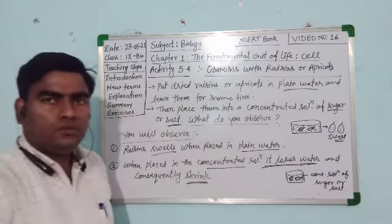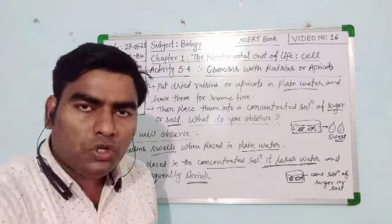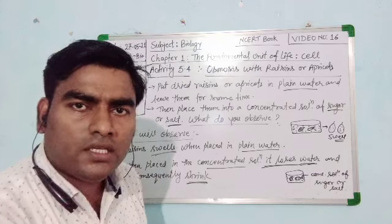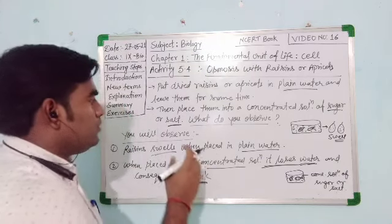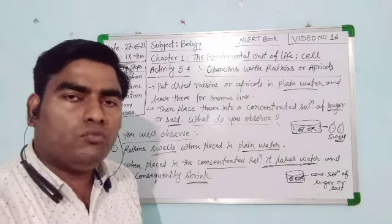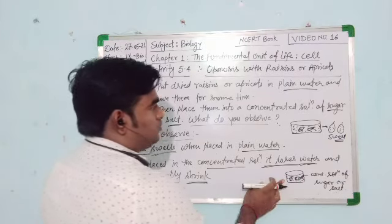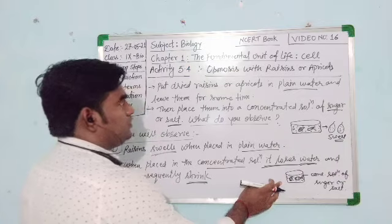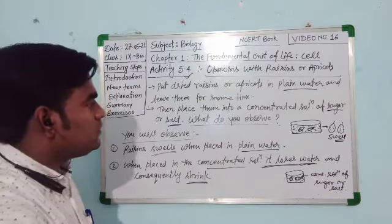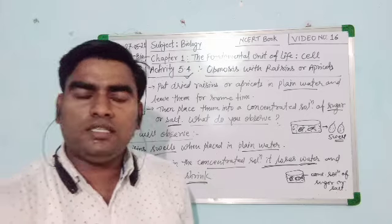This happens because water molecules move across the plasma membrane from higher concentration to lower concentration. This experiment proves that osmosis takes place — water molecules move from higher to lower concentration. This is all about Activity 5.4. In the next video we will discuss the structure and function of the cell wall.